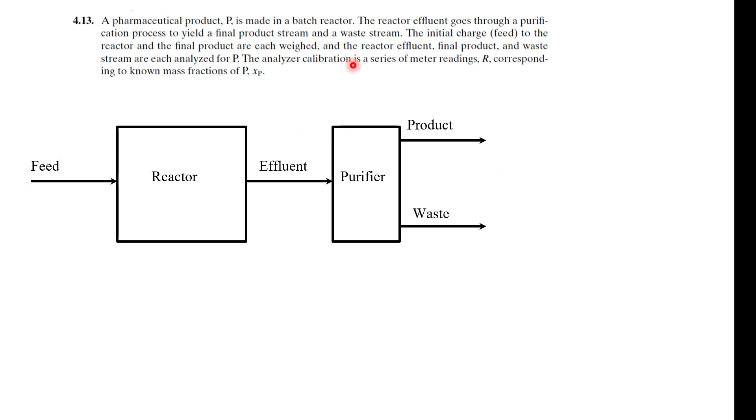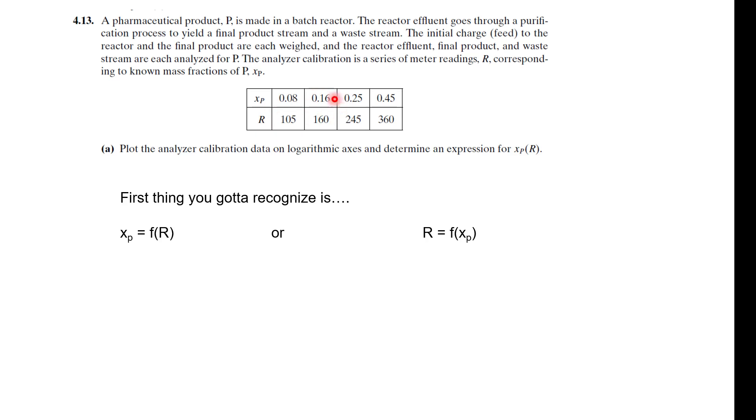It says that the analyzer calibration is a series of meter readings corresponding to known mass fractions of P, which is denoted by XP. So what we have is this data and we have a calibration. We have to plot it on a logarithmic axis to determine an expression for XP as a function of R. The first thing is to realize is XP a function of R or is R a function of XP? They put this first so you might be tempted to think that R is a function of XP. But no, this is just the readings. You have to realize that XP is indeed a function of R.